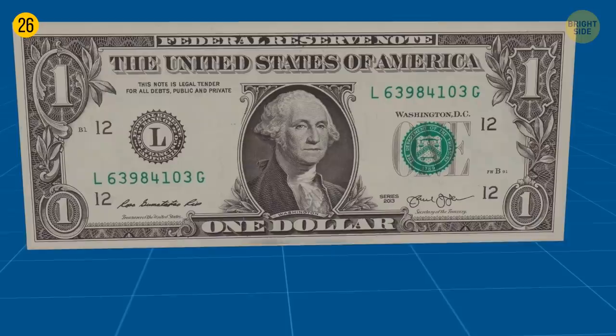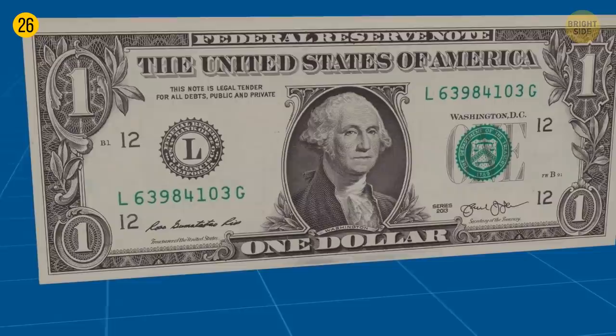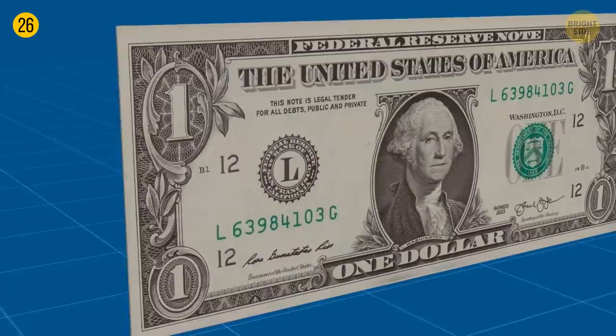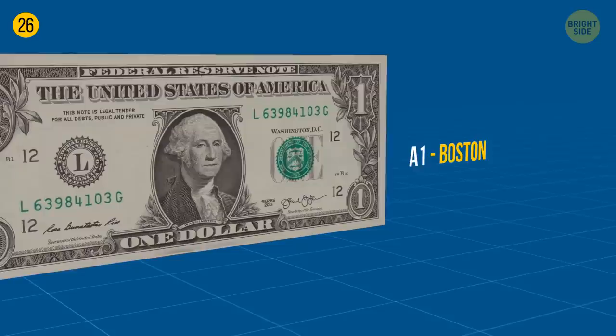A dollar has its secrets too. A large letter with a rim shows which bank is responsible for issuing this bill. 12 different federal reserve banks print all the money, so if you want to know where your money comes from, just look for these small codes.